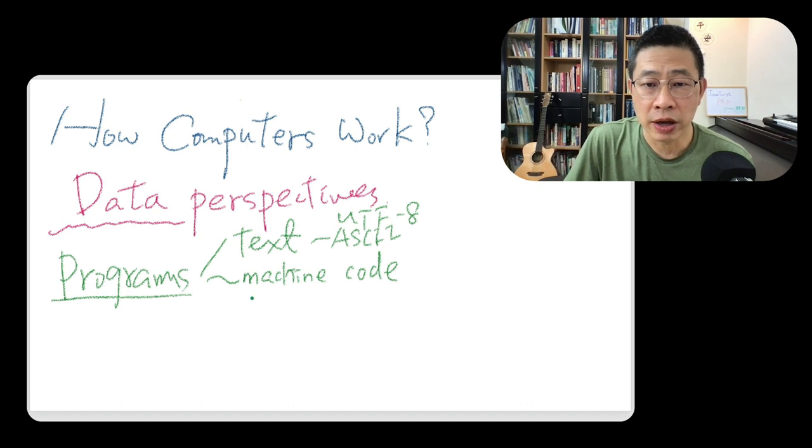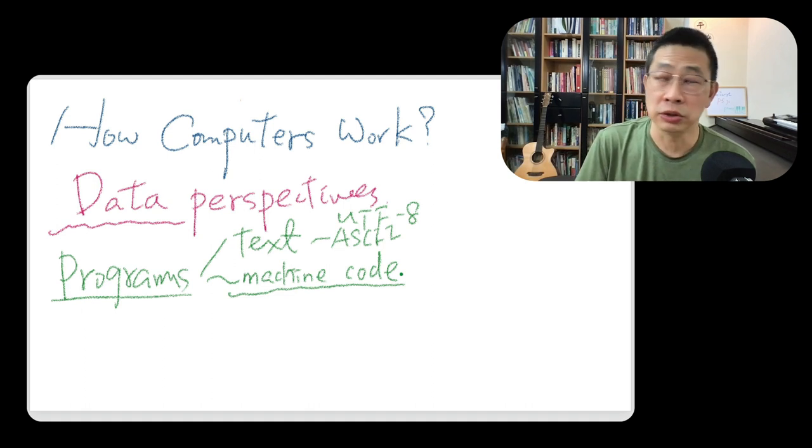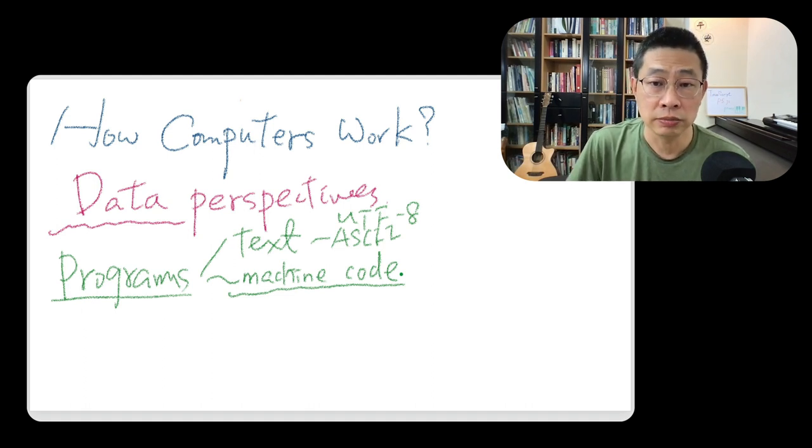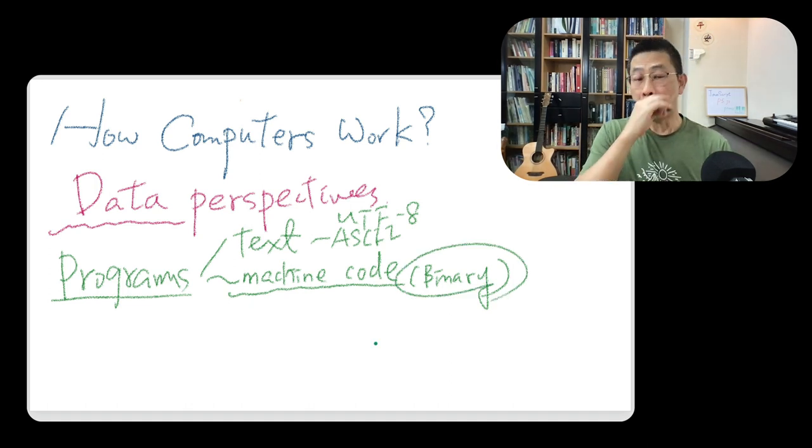So you may find the machine code. You may hear me say the machine code, not for the human to read. Because it's a binary. We call it binary.